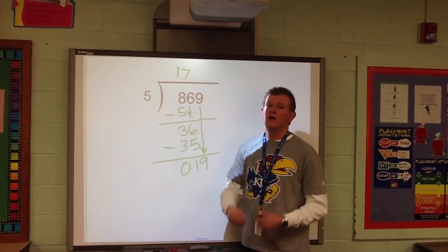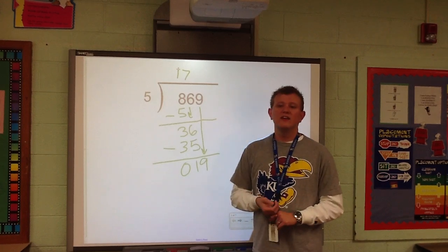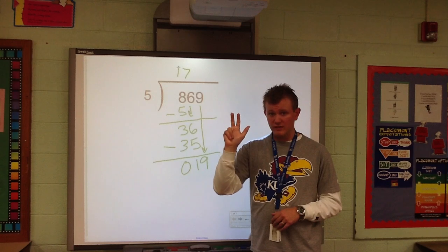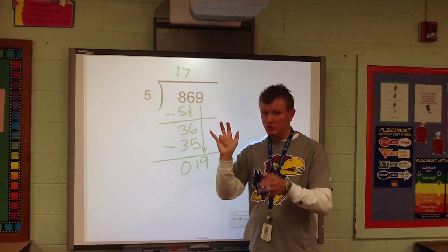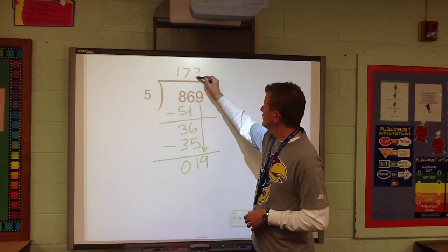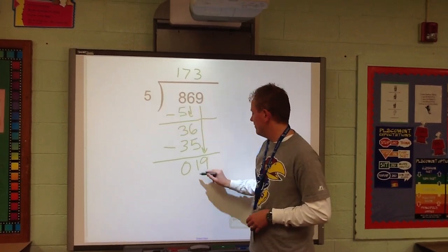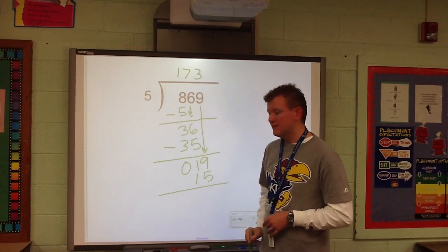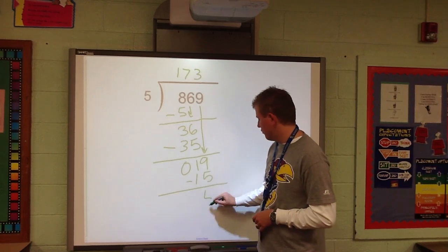So, I've got 19. Does 5 go into 19? Well, once again, of course it does. If we skip count, we say 5, 10, 15, which is 3. Our next one would be 20, which is too high. So, we're going to stick with 3. 5 times 3, which we'll put up here. 3 times 5 is 15. 19 minus 15 is 4.